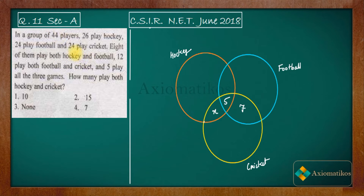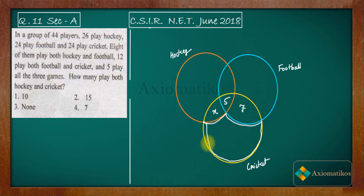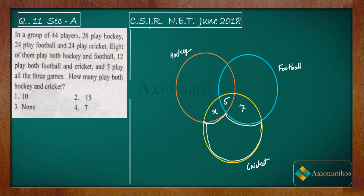We have 24 players in total who play cricket, so the yellow ring representing cricket has 24 players. That means this remaining portion — the cricket-only area — plus x, plus 5, plus 7 should equal 24.